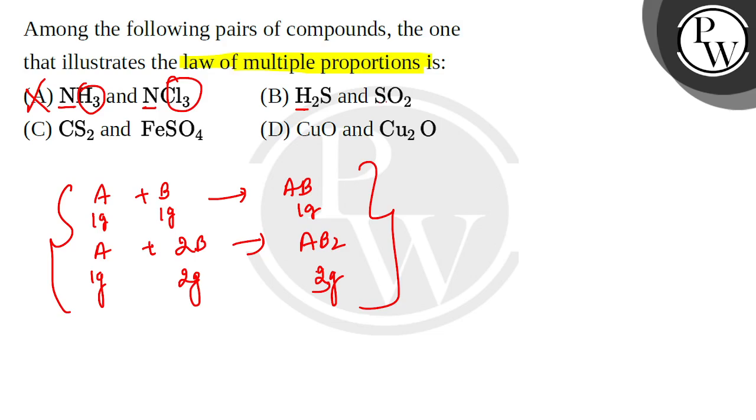In B, there is hydrogen, sulfur, and oxygen. So these are two types of compounds. So there are three types of elements. So again, the law is not valid.